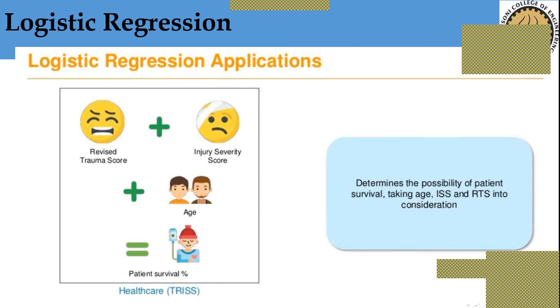If you want to find out if the patient will survive or not, you have to take his age, then ISS value, then RTS value. So using this...